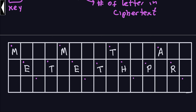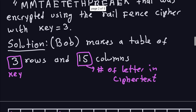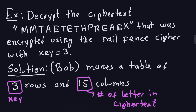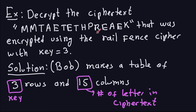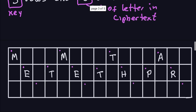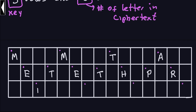Finally, he places the letters in the last row. He goes to the cipher text and takes what follows after the letter R. The letters that come after are E, A, E, K. So E, A, E, K are placed into the last row of the table.